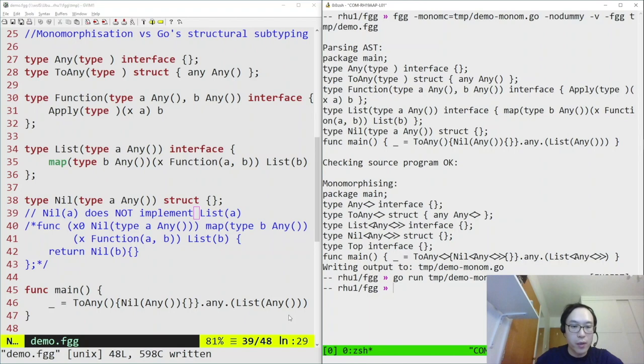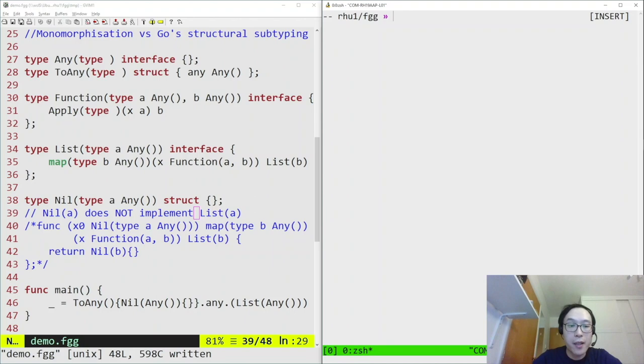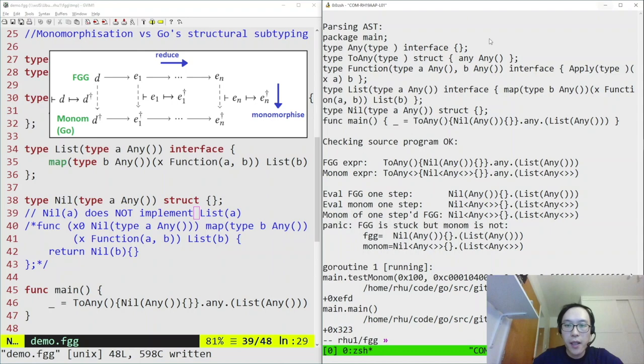We can also use the FGG tool to dynamically check the simulation property between FGG and monomorphized programs. Here we have the initial FGG expression from the main function, and that's the monomorphized version. After one step, both are trying the type assertion, but unfortunately the FGG expression is stuck, meaning here that the type assertion doesn't go through, as intended, but as we saw, the monomorphized version does go through, which is incorrect.